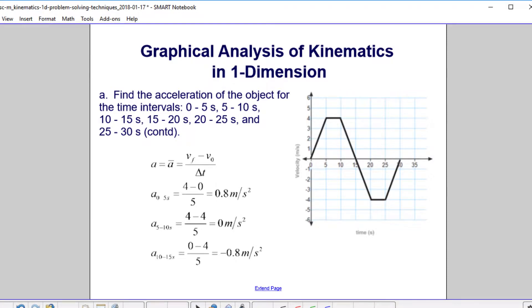We'll do the first three intervals, which is 0 to 5, 5 to 10, and then 10 to 15. Here is 0 to 5. You see the velocity at the 5 second point is 4. At the 0 second, it's 0. You divide by 5, which is the time interval, and we get 0.8 meters per second squared.